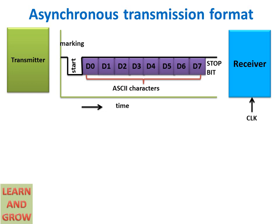Transmission begins with one start bit, followed by the data bits, then one or two stop bits. This is also known as a frame. One bit at a time is transmitted by the transmitter and received by the receiver. In total, 11 bits are used: one start bit, eight character bits, and two stop bits. This is used for low-speed transmission, less than 20 kilobytes per second.